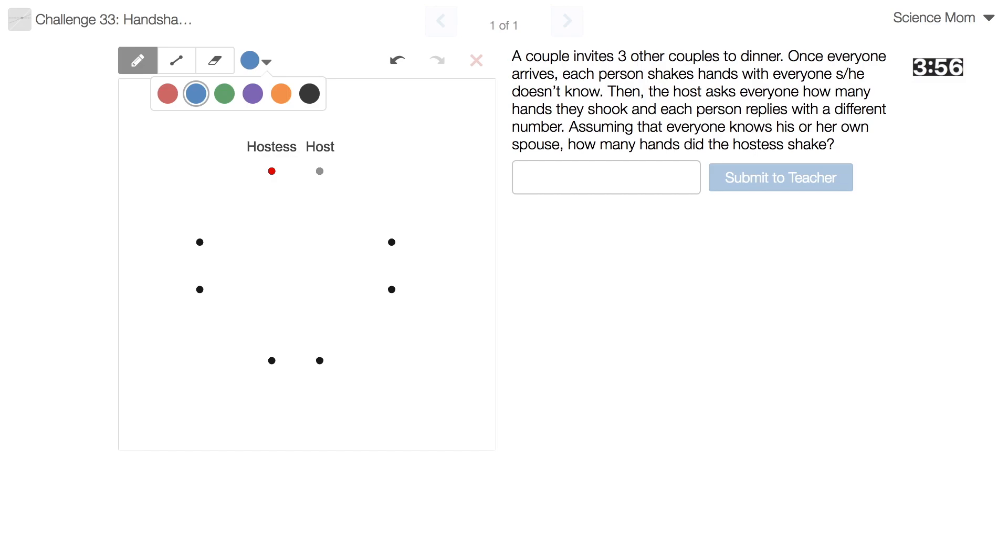Alright. So if everyone knew each person then the number of hands shaken would be zero. I'm gonna kind of try and work backwards a little bit. So for this, this couple does not know the host and the hostess, so they would shake these hands. And if they know this couple, so that individual, that individual. That would have them each shaking two hands. This is interesting.